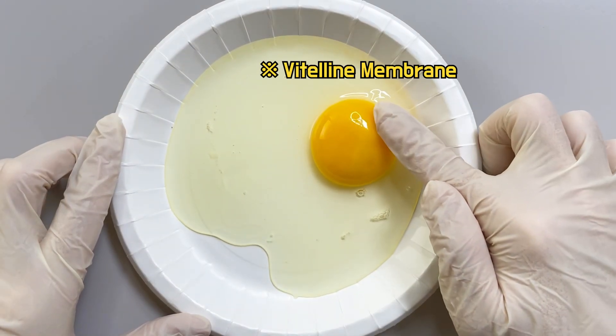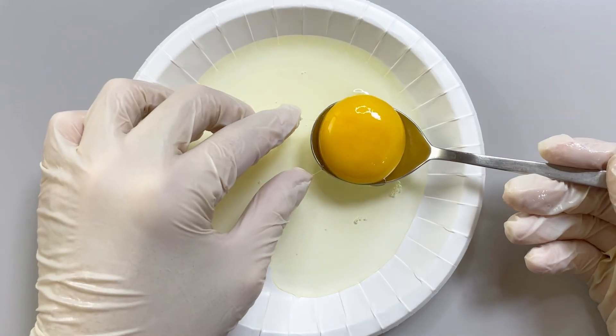And the yolk is surrounded by the vitaline membrane. So it allows us to separate them.